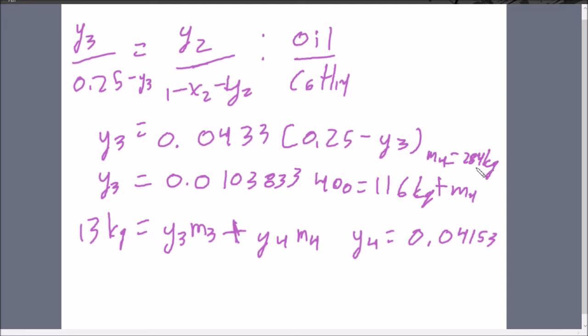So now we're going to use that and plug it into this equation to find that oil fraction component for Y4. Because everything that M2 was giving for the oil component was 13 kilograms, and that 13 kilograms has to be equal to all the oil stuff coming out in the 3 and the 4. So if you do the math, plug in your 284, your 116, and you plug in this new Y3 ratio that we found here, you can isolate that Y4, and very easily you get that Y4 is equal to 0.04153.